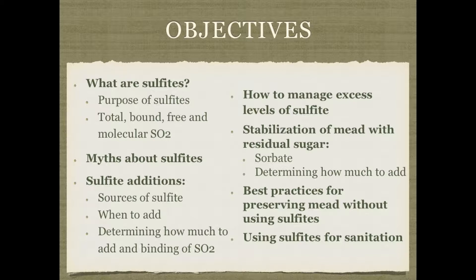Occasionally we might make a mistake and add too much sulfite, and I'll talk about how to manage that and reduce the levels. If you are making a mead with residual sugar, you'll need to use both sulfites in combination with sorbate to prevent re-fermentation and bottle bombs. I'll also talk about best practices for preserving mead without sulfites, and how to use sulfites as a sanitation agent for equipment.